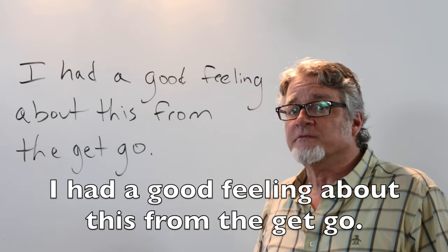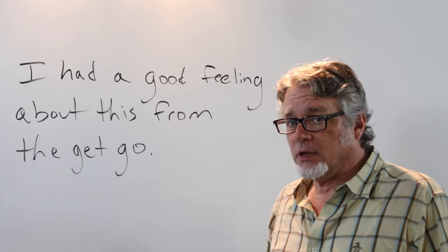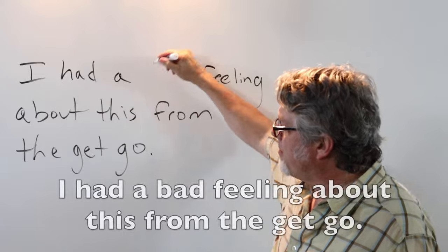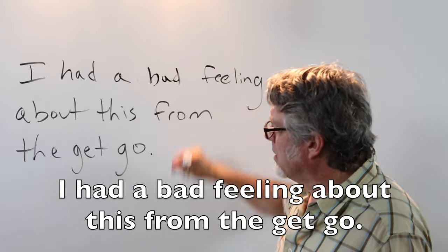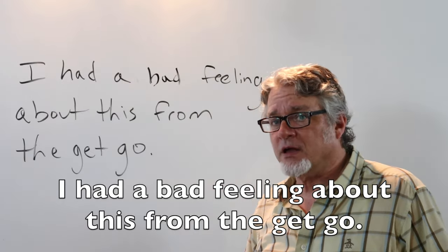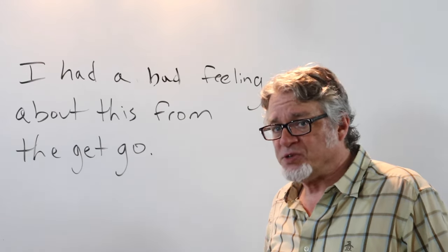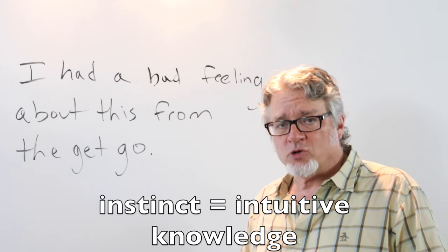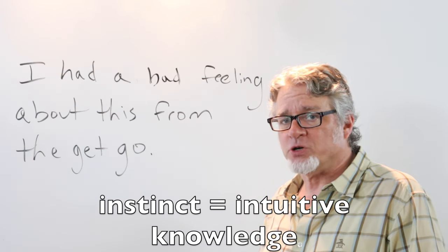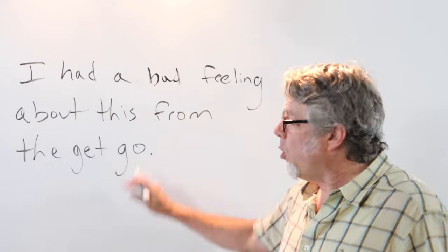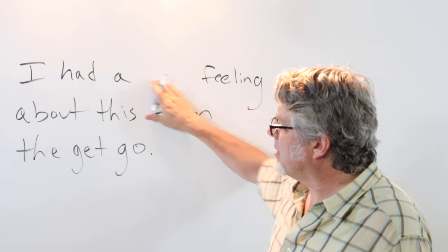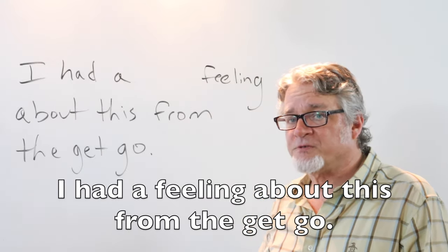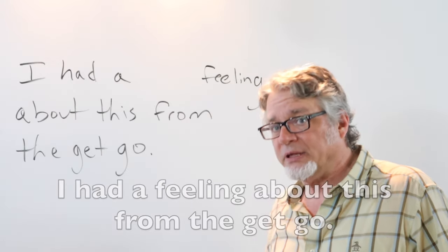Instead of saying good, you could say I had a bad feeling about this from the get-go. This is in reference to some person's instinct about what could possibly happen in the future. Or don't use an adjective, just say I had a feeling about this from the get-go, and the implication is dependent on what this is, the quality of the experience, good or bad.